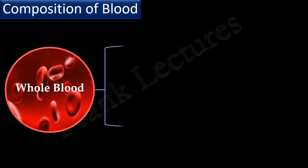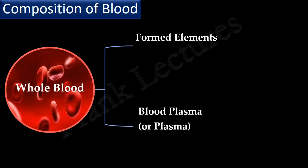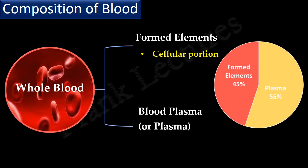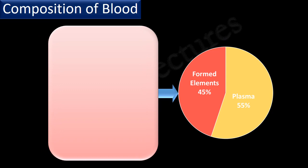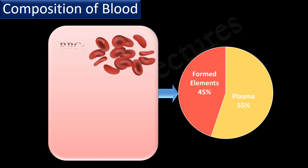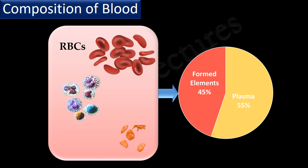Whole blood consists of two main components. The first component is known as formed elements, and the second is known as blood plasma, or plasma. Formed elements is the cellular portion of blood and comprises 45% of the whole blood. Plasma is the fluid portion of blood and comprises the remaining 55%. Formed elements consist of cells and cell fragments — 99% of these are red blood cells, and 1% consists of white blood cells and platelets. These formed elements are suspended and carried in the fluid called plasma.